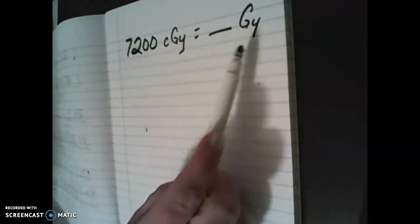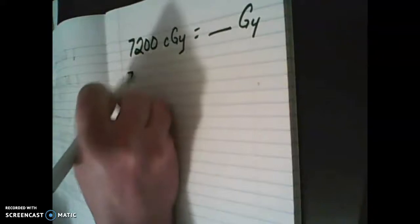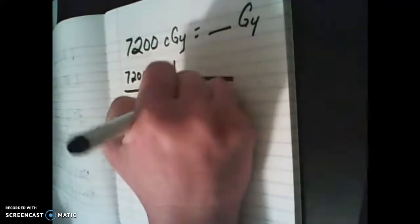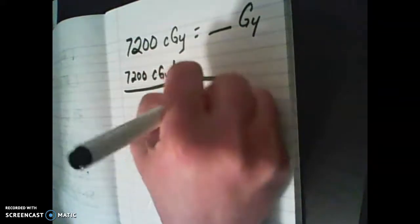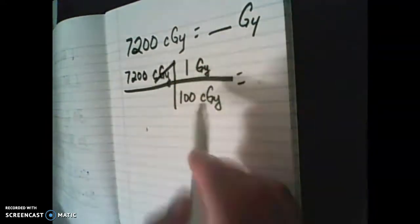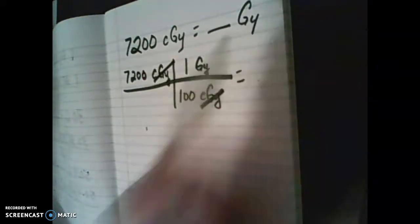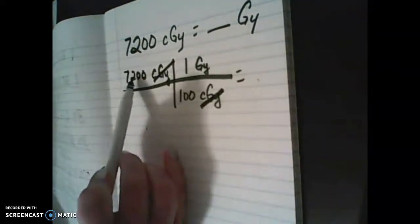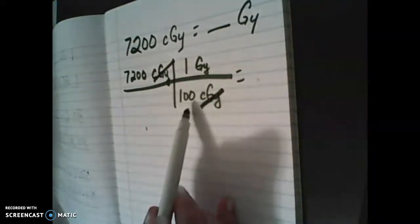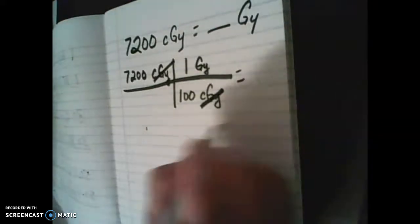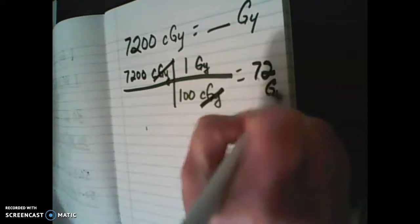Let's look at going from the smaller unit to the larger unit. We're given 7,200 centigrade and want to know how many gray. Set it up the same way, just change how the conversion factor looks. Start with what you know — 7,200 centigrade — and set up the conversion so centigrade cancels and you're left with gray. The math is 7,200 times one divided by 100, which gives us 72 gray.